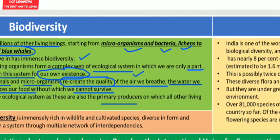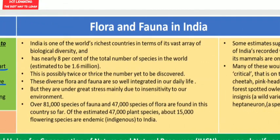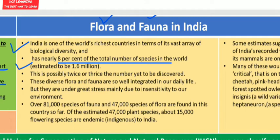Flora means plants and fauna means animals. India is one of the world's richest countries in terms of biological diversity, with nearly 8% of the total number of species in the world, estimated at 1.6 million. This is possibly two or three times the number yet to be discovered. However, these diverse flora and fauna are under great stress mainly due to human insensitivity to the environment.